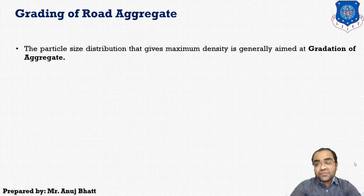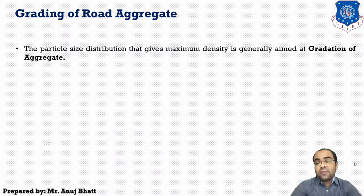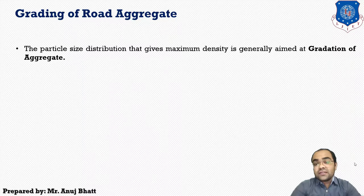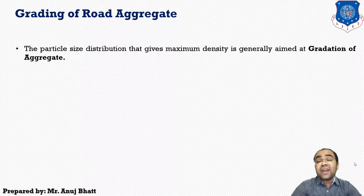We have sieves designated for coarse aggregates and fine aggregates. For coarse aggregates, we have 80 mm, 40 mm, 20 mm, 10 mm, and 4.75 mm sieves. For fine aggregates, the sieves are 2.36 mm, 1.18 mm, 600 micron, 300 micron, and 150 microns.